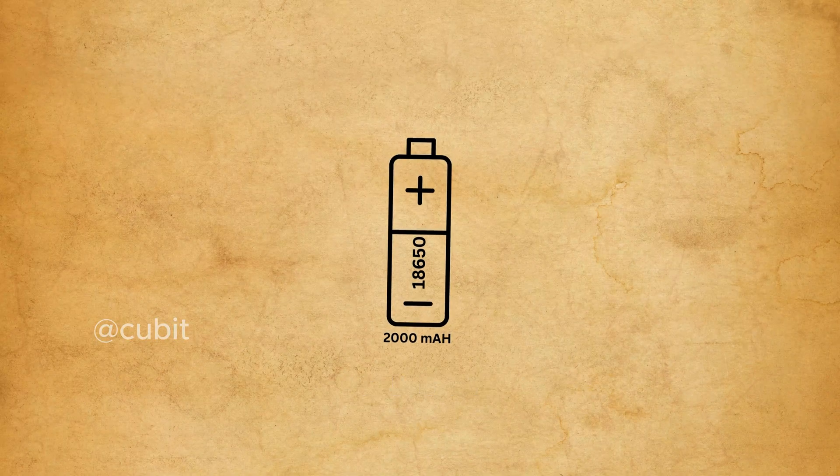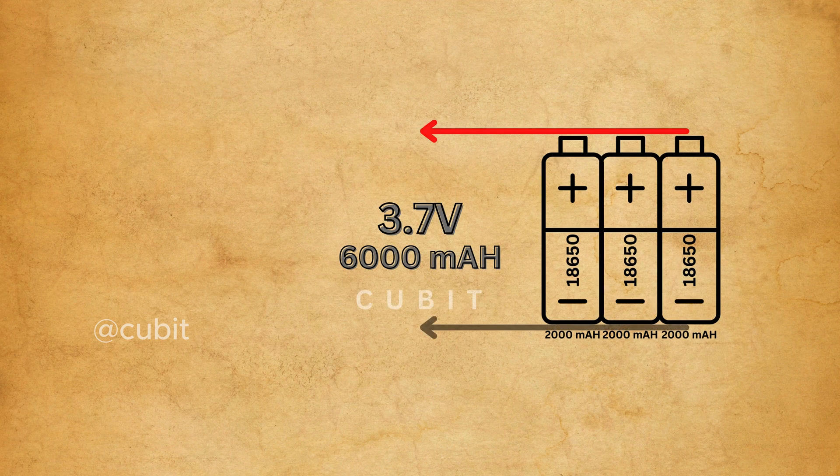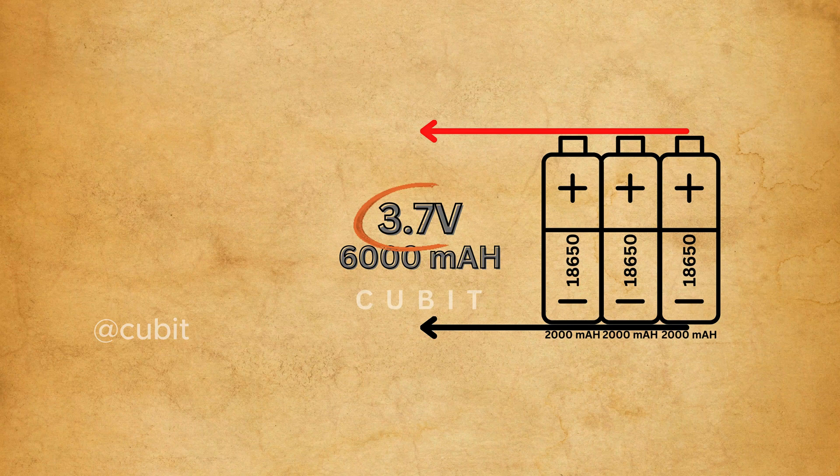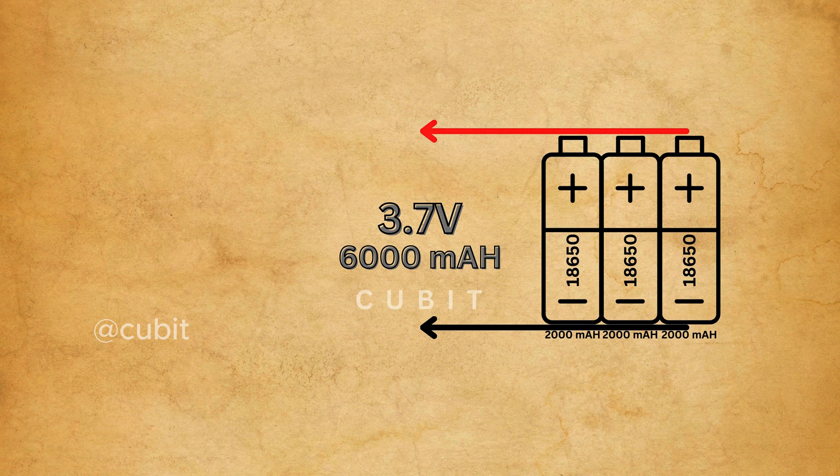If we take a 3.7V 2000mAh 18650 battery and connect three batteries in parallel, the output voltage remains 3.7V but the capacity increases to 6000mAh. When we connect batteries in parallel, the output voltage does not increase but the capacity does.